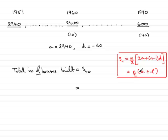Using the last formula, n is clearly 40. So we've got 40 divided by 2 multiplied by the first term, 2,940, plus the last term, 600.